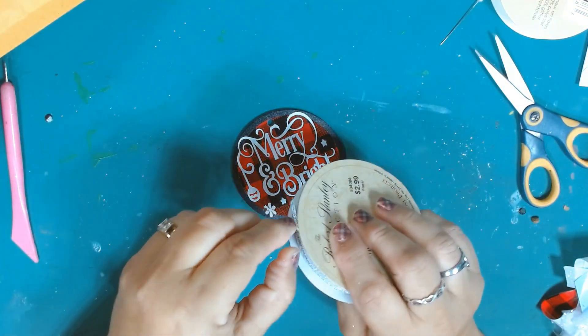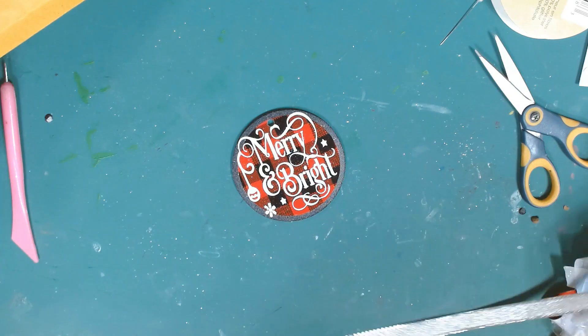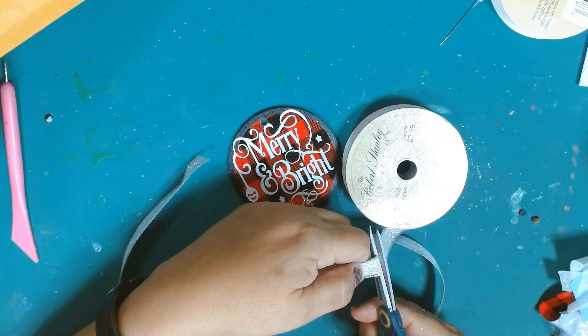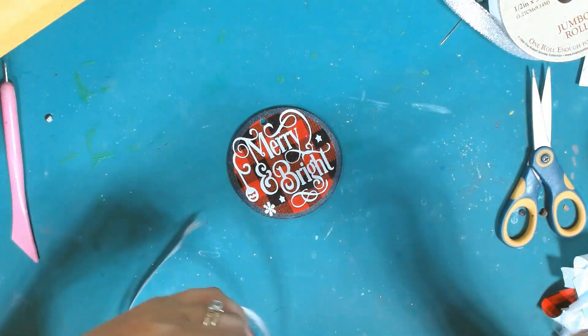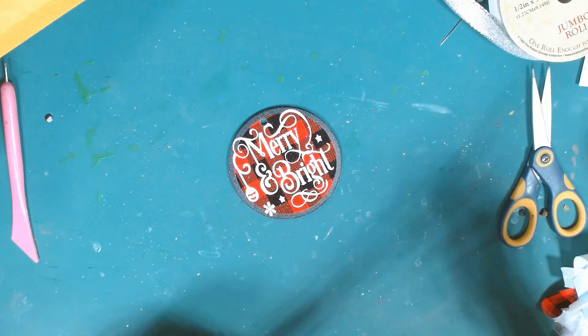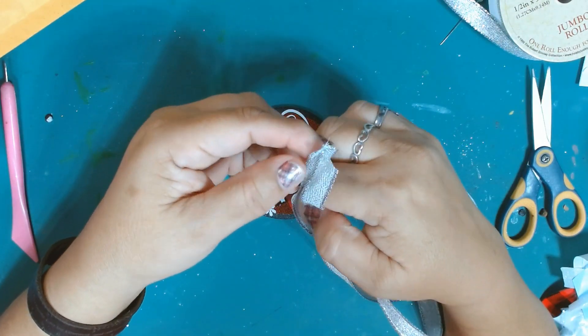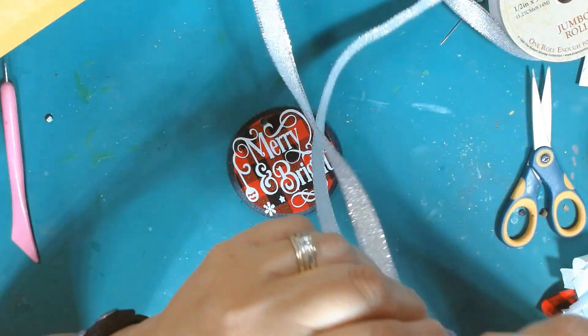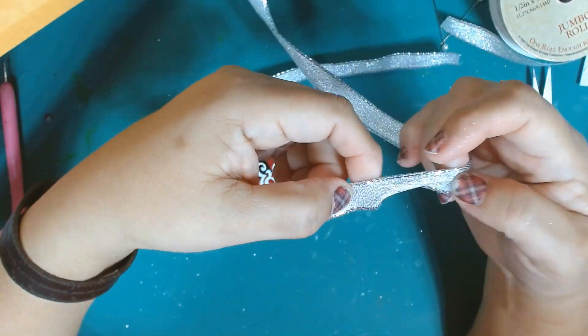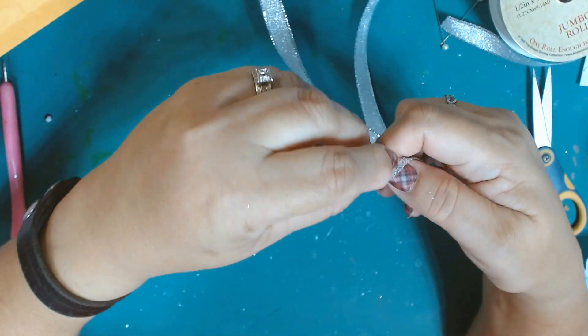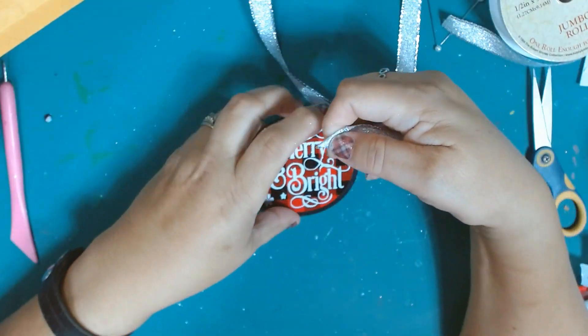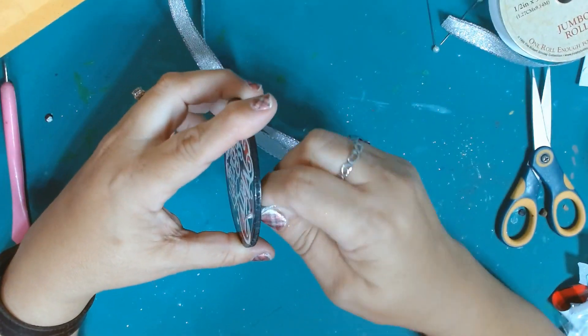Let's now add a ribbon to the top. You can add whatever you want to the top here, but I'm adding some ribbon. This is a silver wire edge ribbon. I believe I got it from Dollar Tree, but I'm not 100% sure. I fold it in half and then give it a little triangle there so I can feed it through the hole on the top of the ornament.